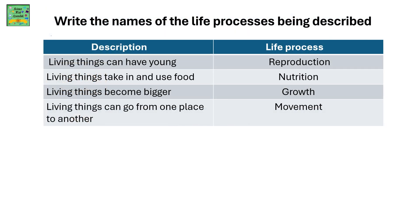Write the names of the life processes being described. Living things can have young — that's reproduction. Living things take in and use food — that's nutrition. Living things become bigger — that's growth. Living things can go from one place to another — that's movement.